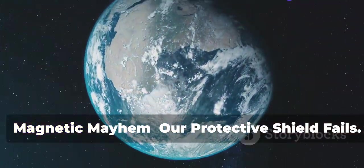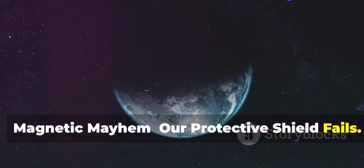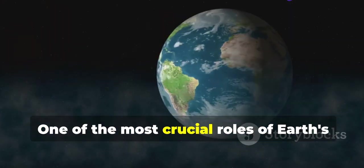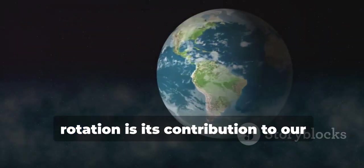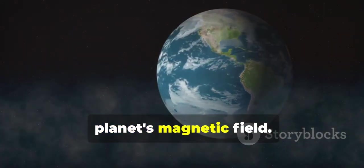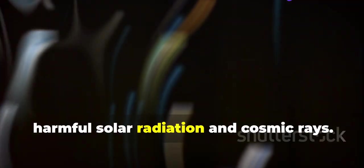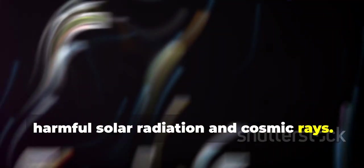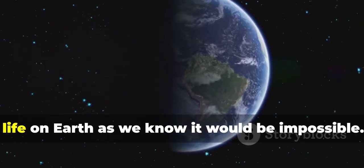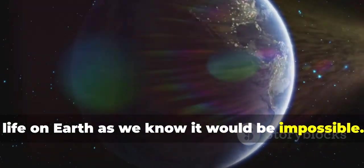Magnetic mayhem. Our protective shield fails. One of the most crucial roles of Earth's rotation is its contribution to our planet's magnetic field. This field, generated deep within Earth's core, acts as a protective shield against harmful solar radiation and cosmic rays. Without it, life on Earth as we know it would be impossible.